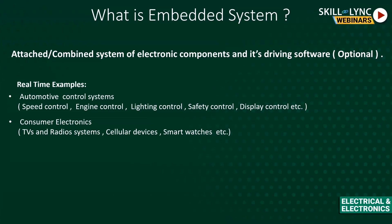Recent consumer electronics products like smart watches, fitness bands, and fitness trackers are also embedded systems. These wearables have many features embedded into a single compact device, making them clear examples of embedded products.